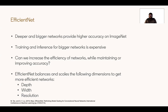Now let's talk about a different kind of network, which are very popular these days, called EfficientNet. We already discussed that deeper and bigger networks provide higher accuracy on ImageNet, but training and inference on these bigger networks is very expensive — training takes more time, and slow inference can be prohibitive for applications. Especially at LinkedIn, we use image features in our feed and other time-sensitive applications, so running inference on image data in time is very important. The question EfficientNets answer is: can we increase the efficiency of these networks while maintaining or even improving accuracy?